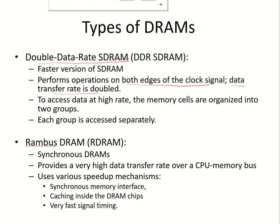To access the memory at such a high rate, the memory cells are organized into two groups and each group can be accessed separately. Then we have the Rambus DRAM. These are again synchronous DRAMs and they provide a very high data transfer rate over the CPU memory bus. They use various speed-up mechanisms like a synchronous memory interface, caching mechanisms inside the DRAM chips, and very fast signal timing. So these were the different types of DRAMs that are available.